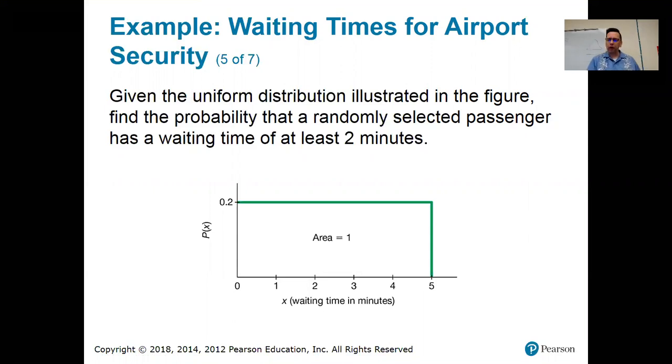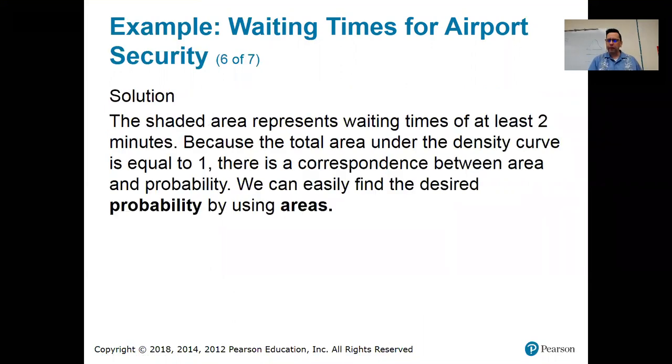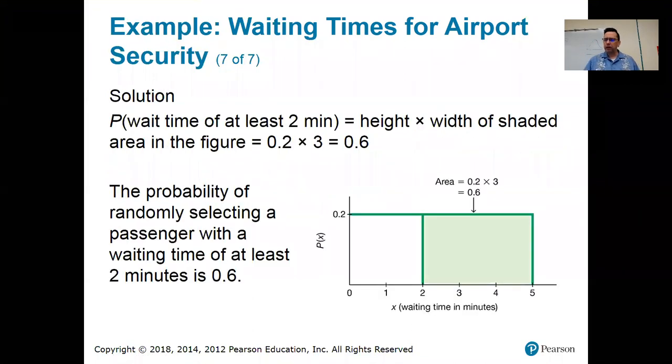So the way that's going to work is I am going to shade the part of the rectangle that is bigger than two. All right. So here are the waiting times down here at the bottom. So I'm just going to color the part of the rectangle that represents X greater than two. And then I'm going to calculate the area of that rectangle.